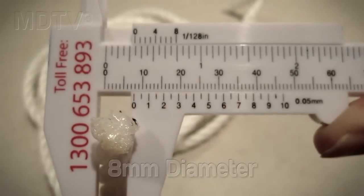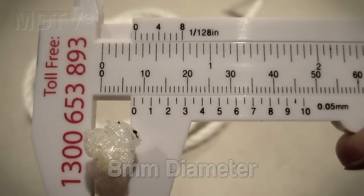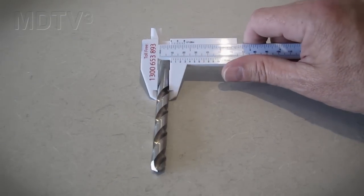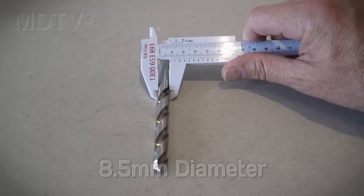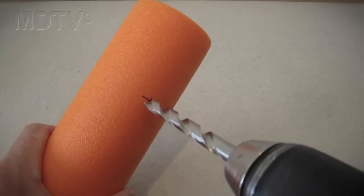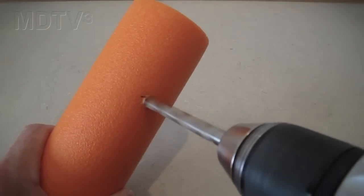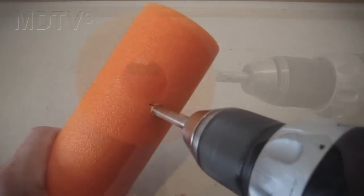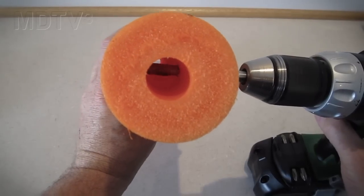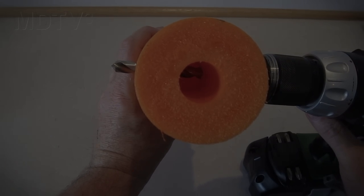I'm using eight millimeter rope but you can use whatever size rope you have available. Use a drill slightly bigger than the diameter of your rope - I'm using an 8.5 millimeter drill. Drill a hole through both ends of all sections. Drill the holes through the pool noodle as straight as possible so that when they break through on the other side they'll be in the same line.